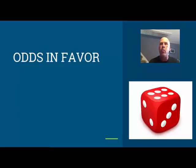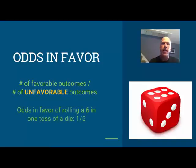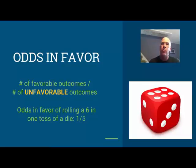Let's start by looking at odds in favor. Instead of looking at favorable over total, we're going to look at a comparison of the favorable outcomes to the unfavorable outcomes. For example, the odds in favor of rolling a six with the die: there's one side that has the number six on it and five that don't, so the odds in favor are one over five.